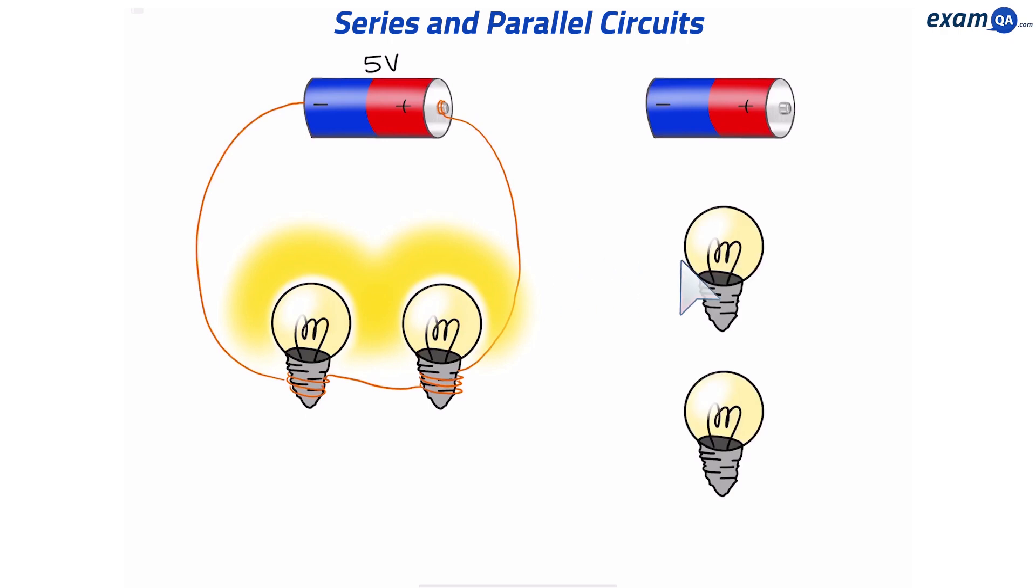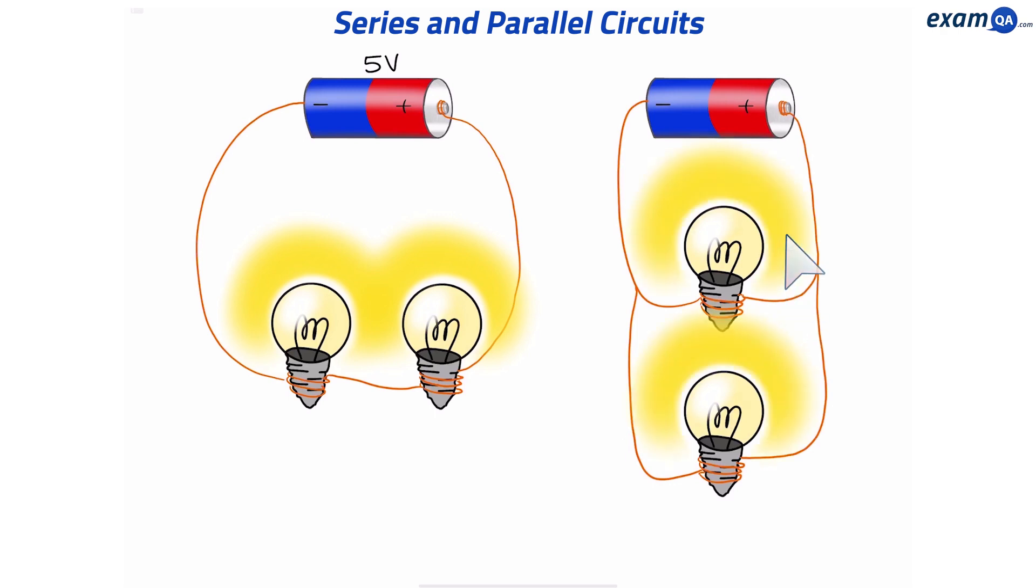Here's another cell and two more bulbs. This time I'm going to connect them slightly differently. Now I've made a different circuit and just like the previous one, the bulbs will also turn on here.